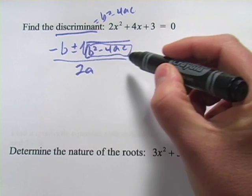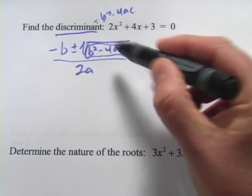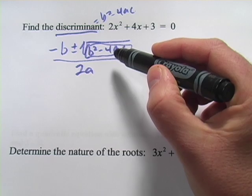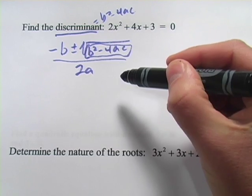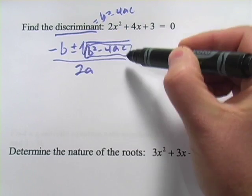So think about this. Under that square root, there are three possibilities. You could have a positive number. If you have a positive number there, you're going to have two real solutions because the square root of a positive number is a real number, and then you've got this plus or minus.